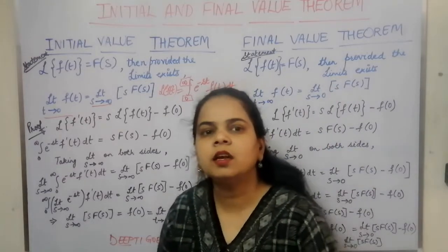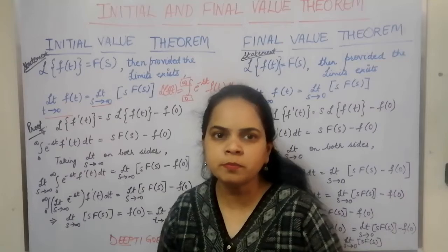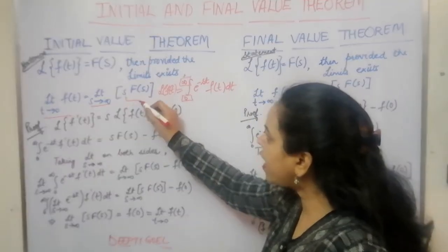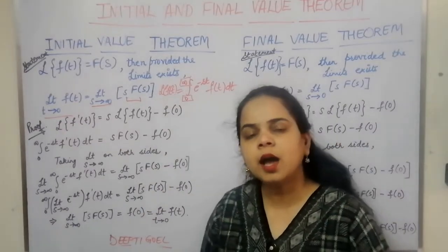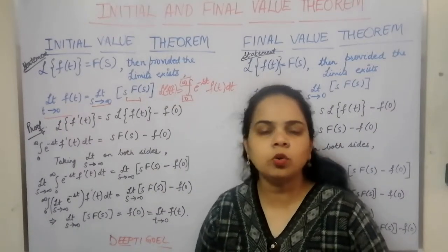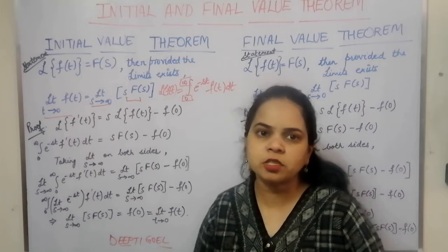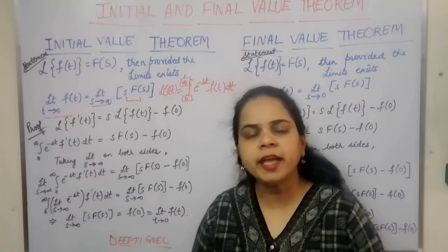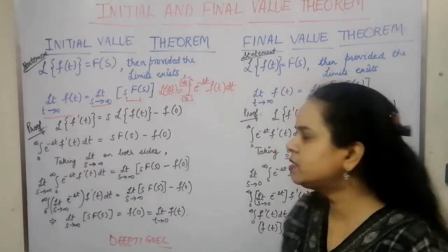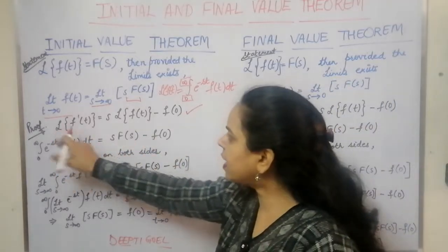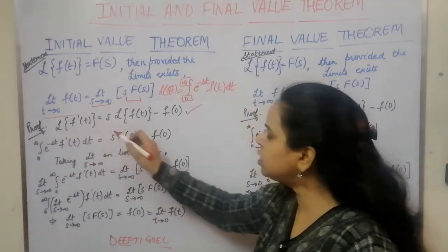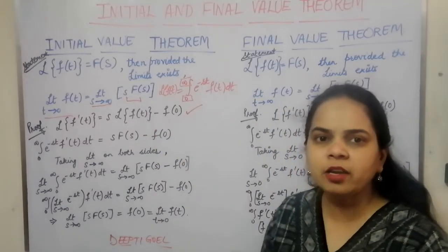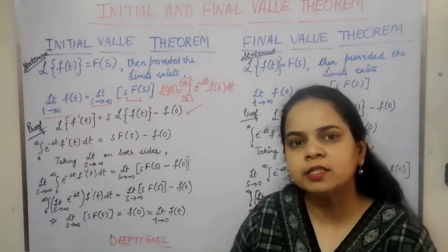Now let us see the proof of the theorem. You must remember that s·F(s) appears when we take the Laplace of the derivative of the function. So in the proof, we shall start with the Laplace of the derivative f'(t) itself. We have: Laplace of f'(t) = s·Laplace{f(t)} − f(0), that is, s·F(s) − f(0).